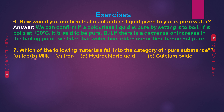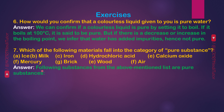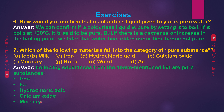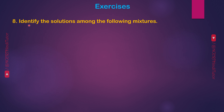If there is a decrease or increase in the boiling point, we infer that the water has added impurities and hence is not pure. Question 7: Which of the following materials fall into the category of pure substance? A — Ice, B — Milk, C — Iron, D — Hydrochloric Acid, E — Calcium Oxide, F — Mercury, G — Brick, H — Wood, I — Air. Answer: The following are pure substances — Iron, Ice, Hydrochloric Acid, Calcium Oxide, Mercury.